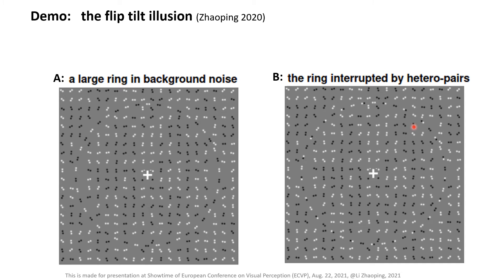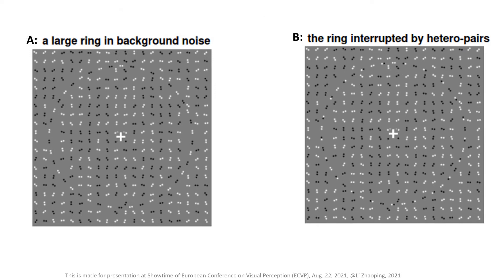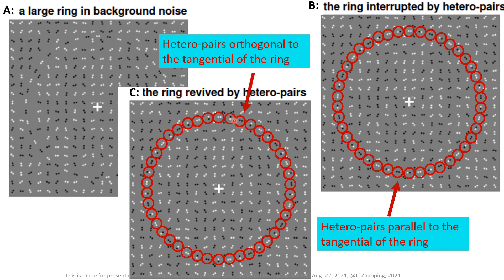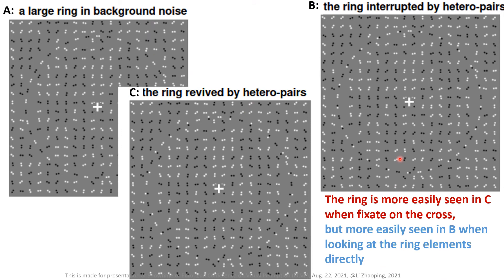If we make these hadal pairs orthogonal to the ring, then by the flip tilt illusion, they should appear parallel to the ring when we fixate on the cross, making the ring visible in the peripheral visual field. In the third image, which differs from the second image only in the orientation of the hadal pairs, these hadal pairs are now orthogonal to the ring. You can see whether it's easier to see the ring in image C than in image B when you fixate on the central cross. Most of you should find it easier to see the ring in image C. However, if you shift your gaze to the ring directly, the hadal pairs will be in your central visual field, and you will find the ring easier to see in image B. So central vision and peripheral vision are different, and this flip tilt illusion occurs only in peripheral vision.